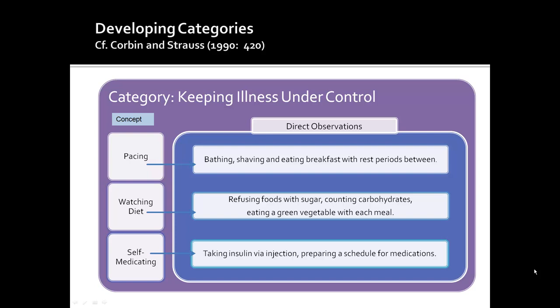Here is an example of the development of categories from the article by Corbin and Strauss. The category is 'keeping illness under control.' Direct observations — bathing, shaving, and eating breakfast with rest periods in between — inform the development of the concept 'pacing.' Pacing, watching diet, and self-medicating are all concepts that come under the category of keeping illness under control.